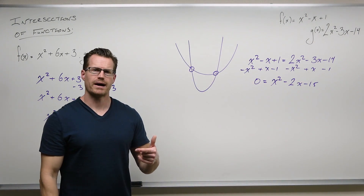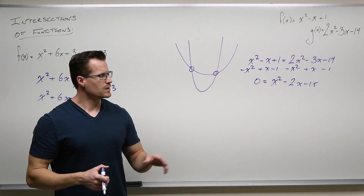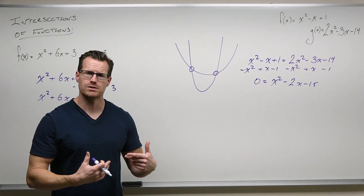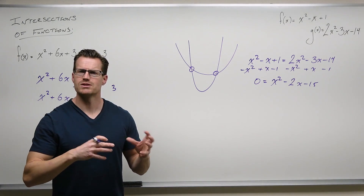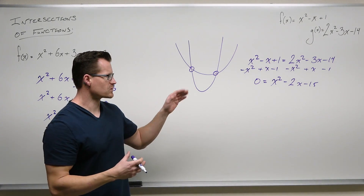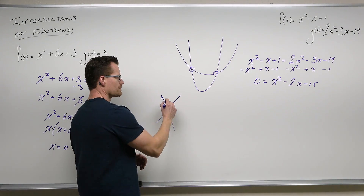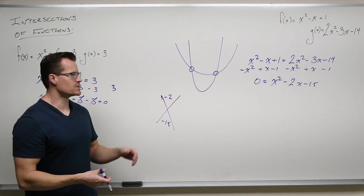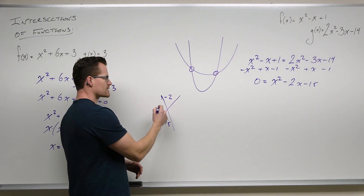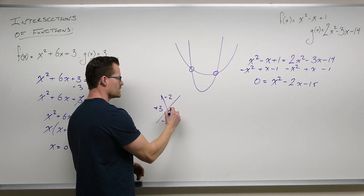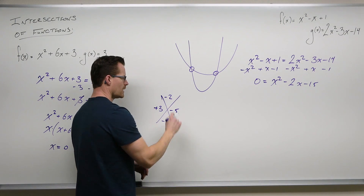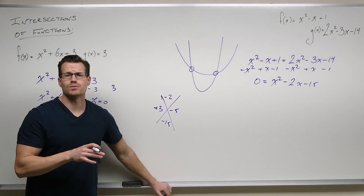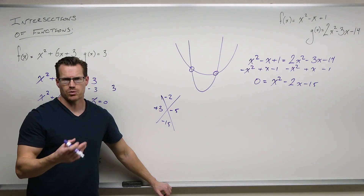It looks like this is going to factor, but I want to talk about what if it didn't. Square root method is off the table here. Factoring would be number one. We do know this is going to factor because we can find numbers that add to negative 2 and multiply to 1 times negative 15 — that's going to be positive 3 and negative 5. That adds to negative 2 and multiplies to negative 15. If that didn't work, you'd be doing the quadratic formula right now.